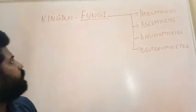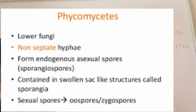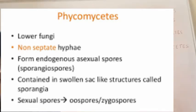The first phylum is Phycomycetes — these are primitive or lower fungi. Their hyphae are non-septate or aseptate — no divisions. They form asexual spores called sporangiospores, which are present in sac-like structures called sporangia. Sexual reproduction is shown in Phycomycetes; the sexual spores could be either oospores or zygospores.